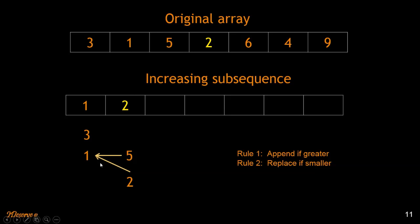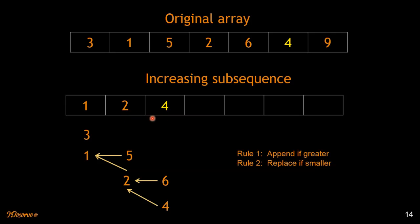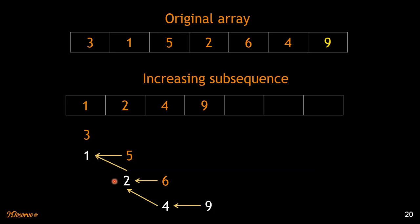Six is greater than two, so we append and set six's parent pointer to two. Now four is less than the last element, so rule two applies. We do a binary search and find that four replaces six. We update four's parent pointer to two, so four comes after two in the increasing subsequence. Nine is greater than four, so we append nine with its parent pointing to four. To get the longest increasing subsequence, we take the last element — nine — and follow its parent pointers: nine → four → two → one.